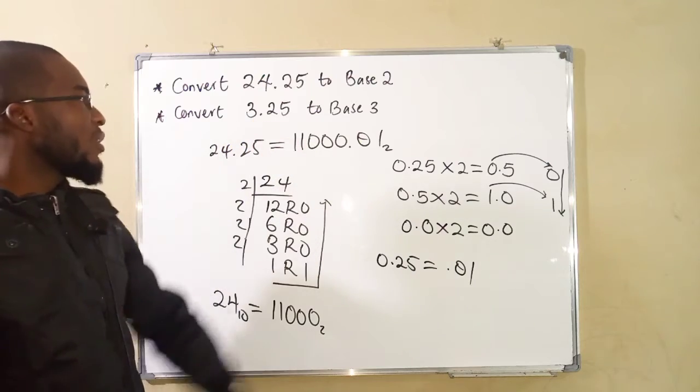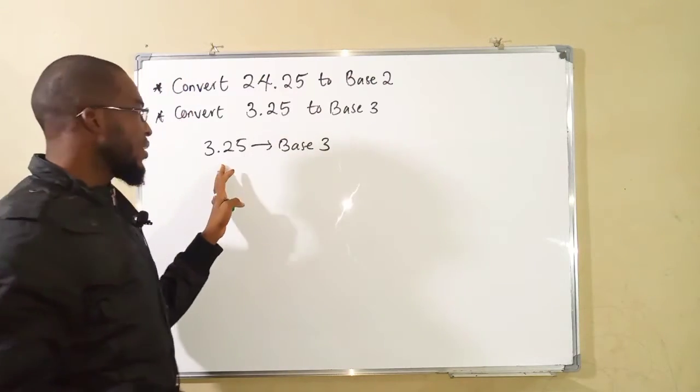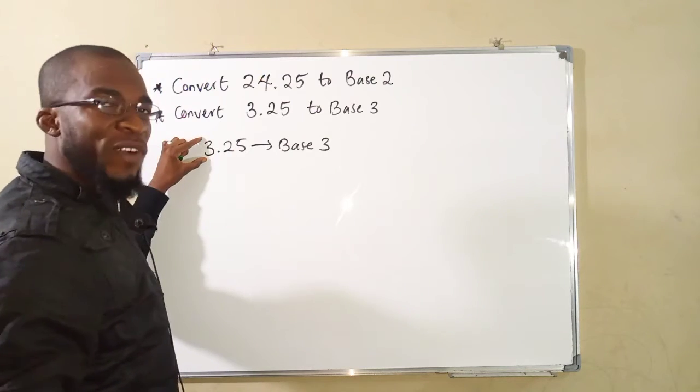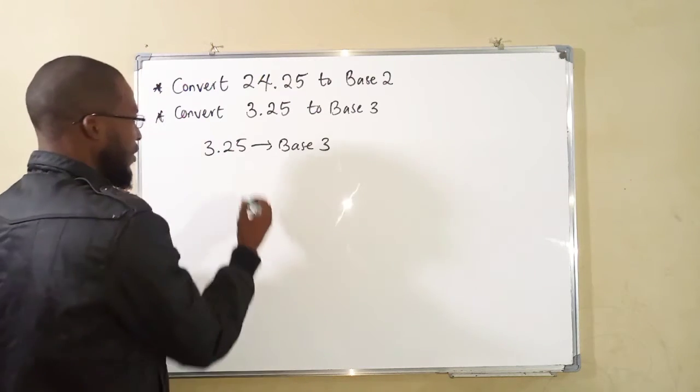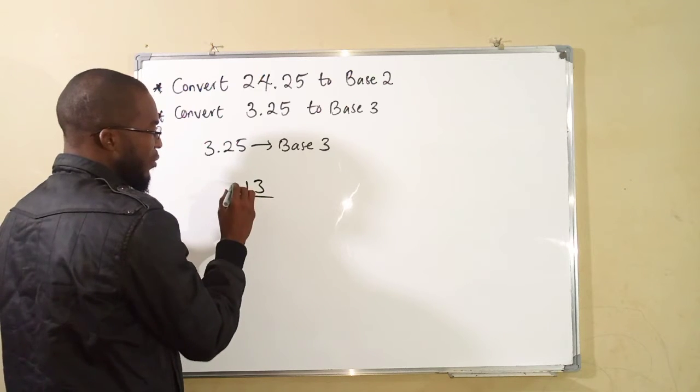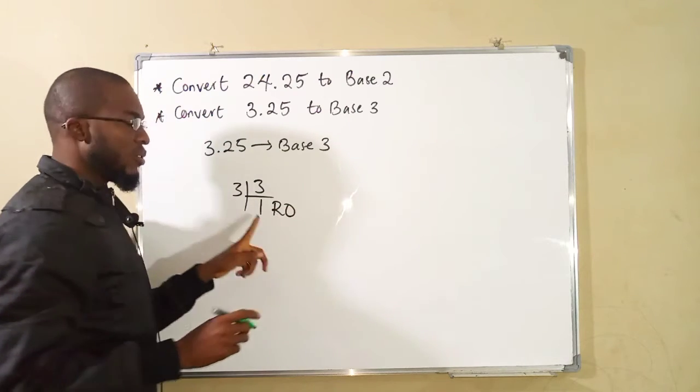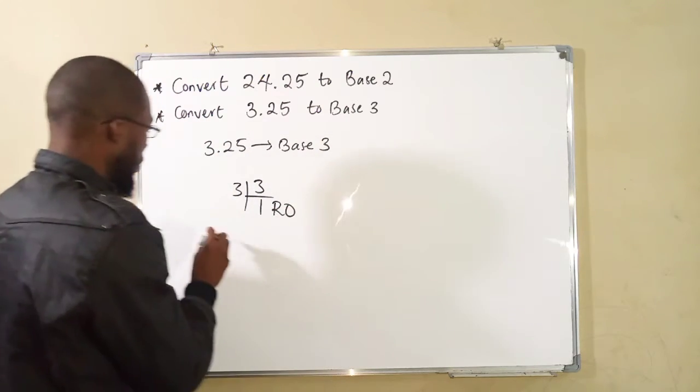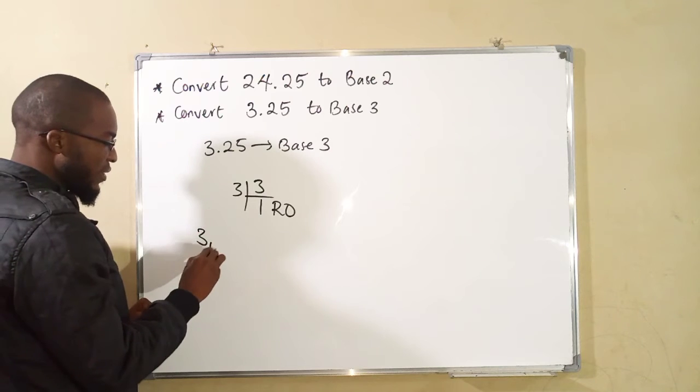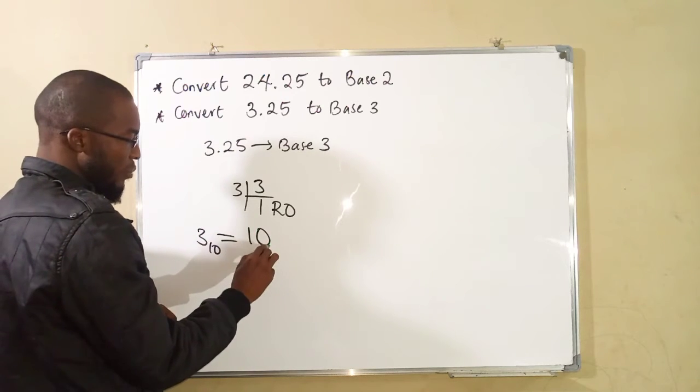Let's see how we can convert this number to base 3. Now to convert this number to base 3, let us start converting the whole number to base 3. If you divide 3 by 3, you shall obtain 1 without remainder. 3 cannot go into 1. You stop. And conclude by saying 3 in base 10 will be equal to 1, 0 in base 3.